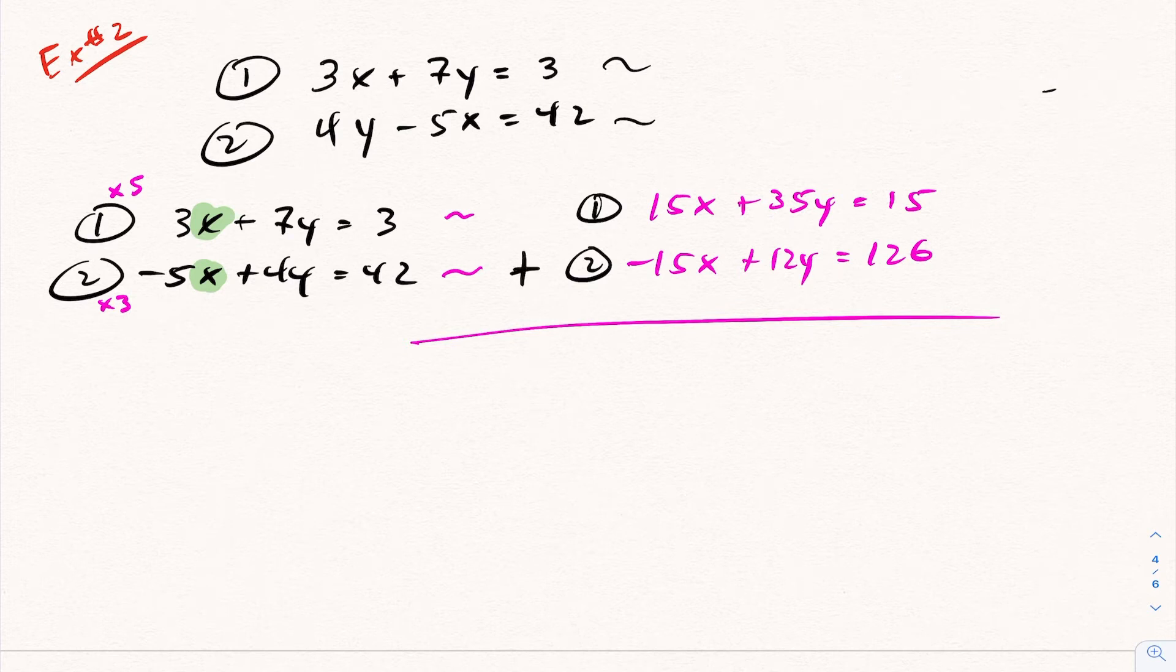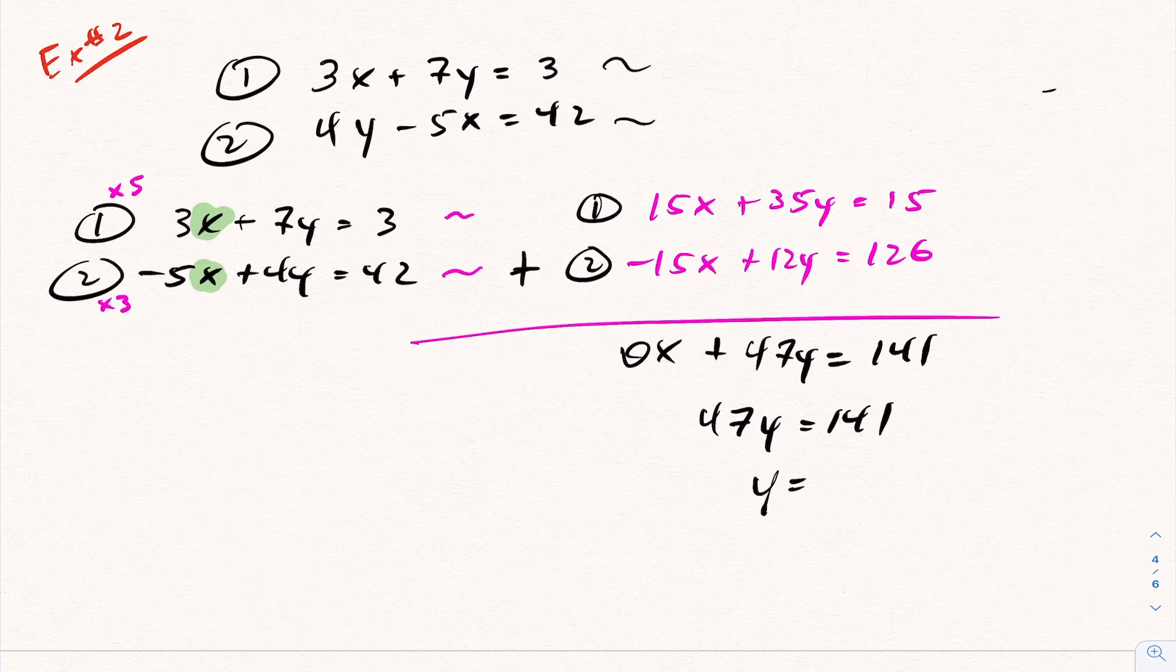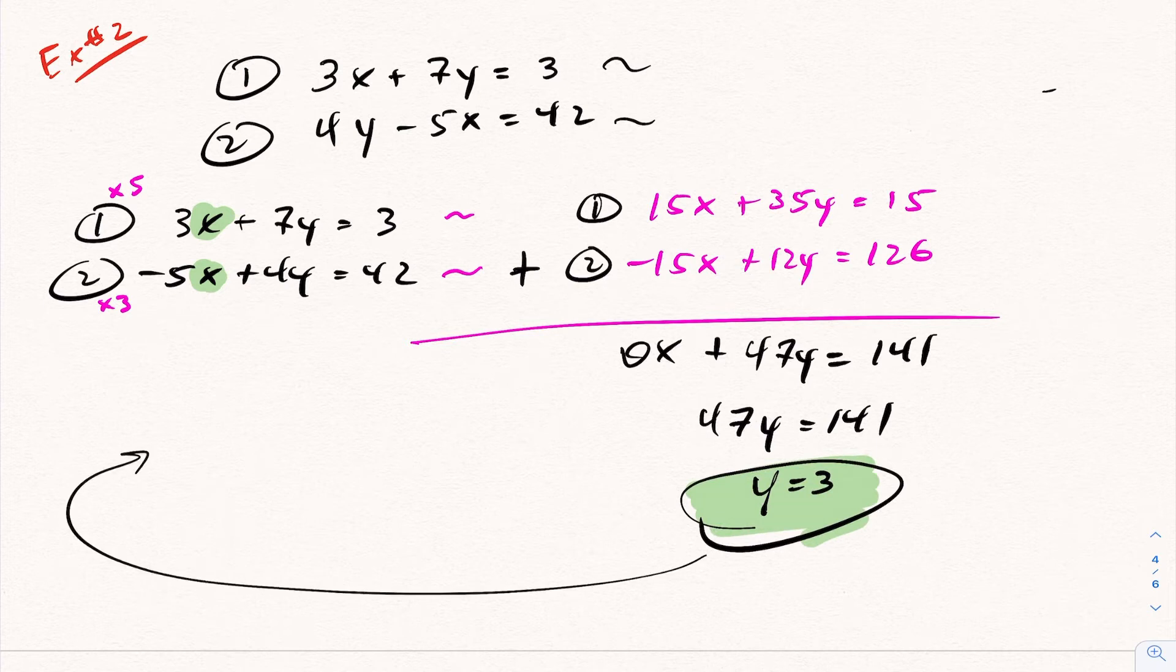So if you choose addition, you get 0x plus 47y equals 141. So you get 47y equals 141, and divide that out, and you get y is 3 here. Now that you have your y value being 3, you can sub this into either equation.